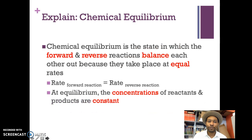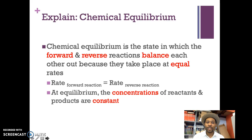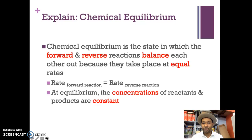Chemical equilibrium is the state in which the forward and reverse reactions balance each other out because they're taking place at equal rates. In other words, the rate of the forward reaction is equal to the rate of the reverse reaction. At equilibrium, the concentration of reactants and products are constant — the rate at which the reaction moves in one direction equals the rate in the opposite direction, and the concentrations balance out.